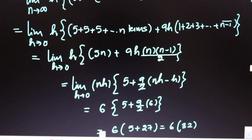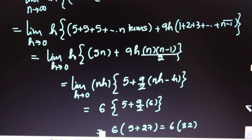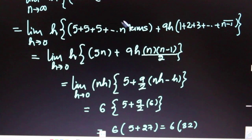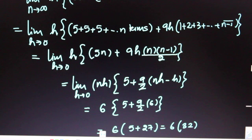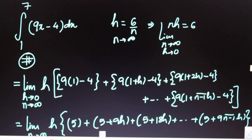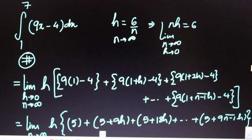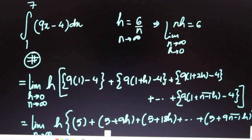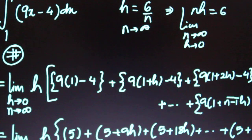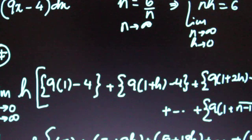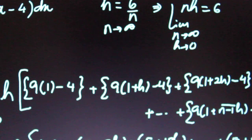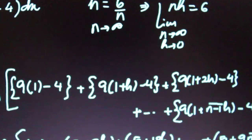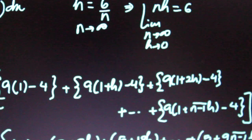Let me revise what we have done. The question was the integral of (9x - 4) from 1 to 7. We computed 9(1) - 4 for the first term and built up to 9(n-1)h. Grouping gave 5n and 9 · n(n-1)/2, then nh = 6 was substituted.